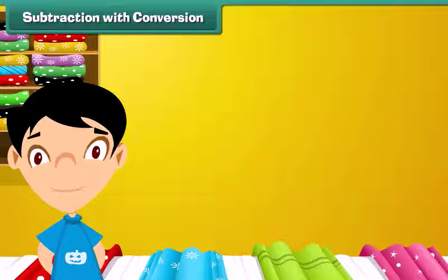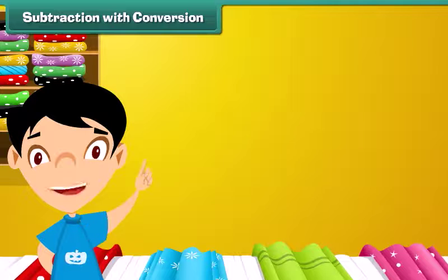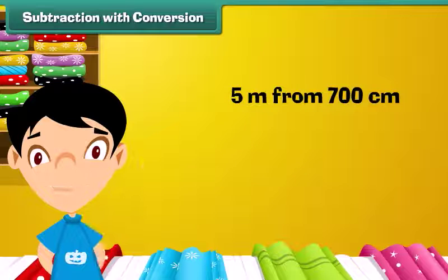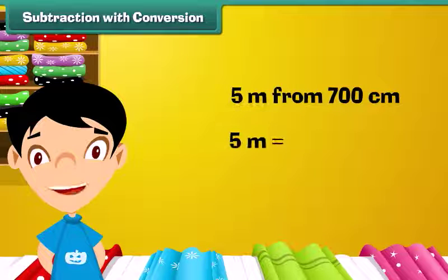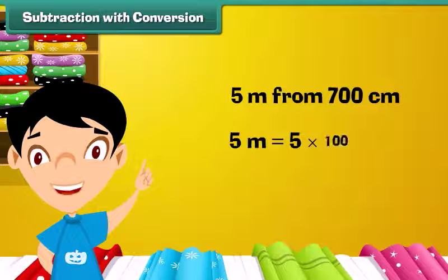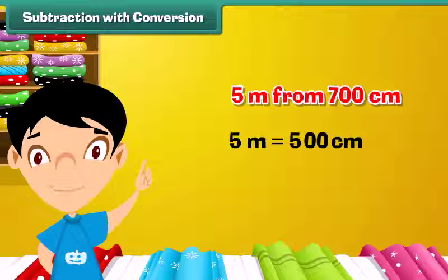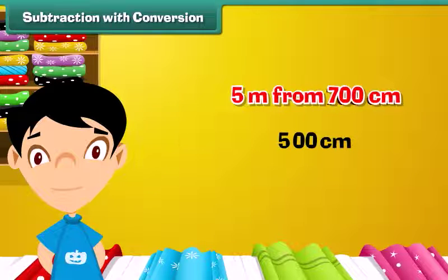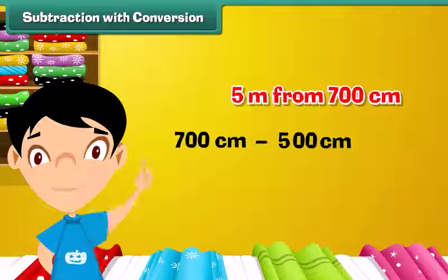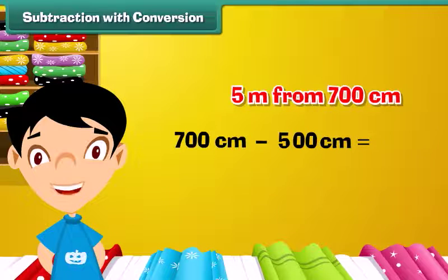Subtraction with conversion: Let us subtract 5 meters from 700 centimeters. 5 meters equals 5 into 100 centimeters, which equals 500 centimeters. Therefore, 700 centimeters minus 500 centimeters equals 200 centimeters.